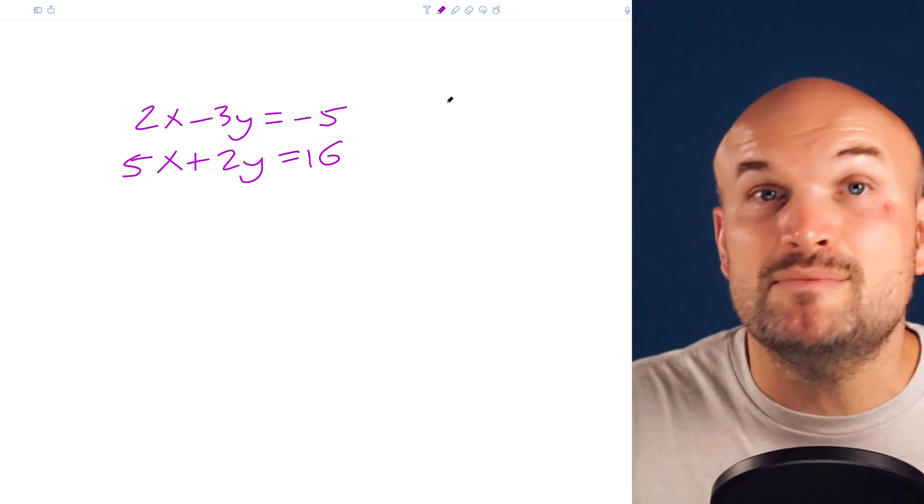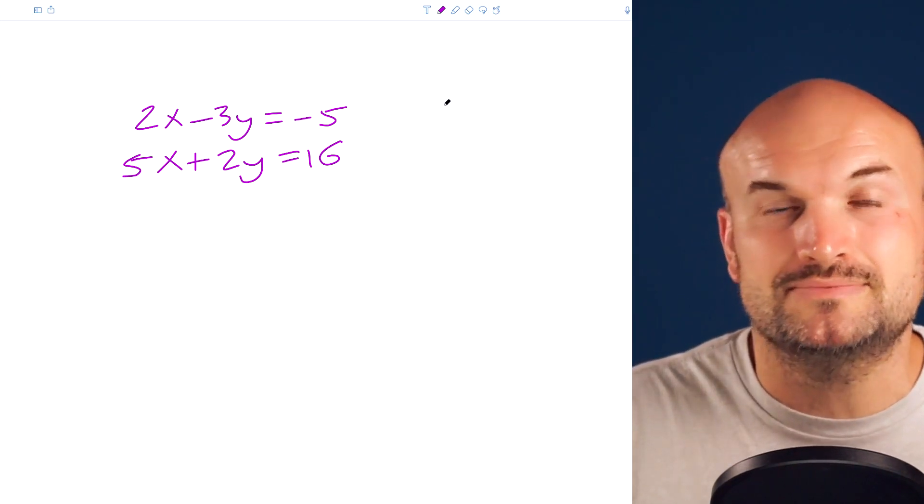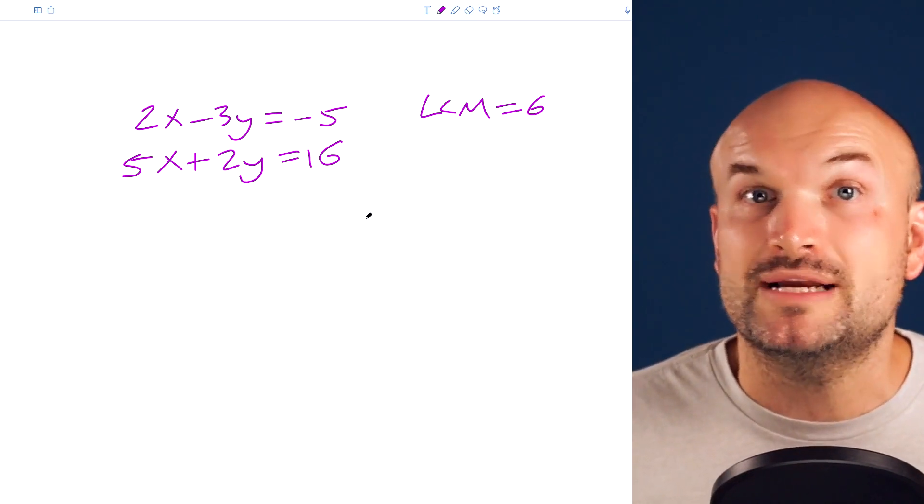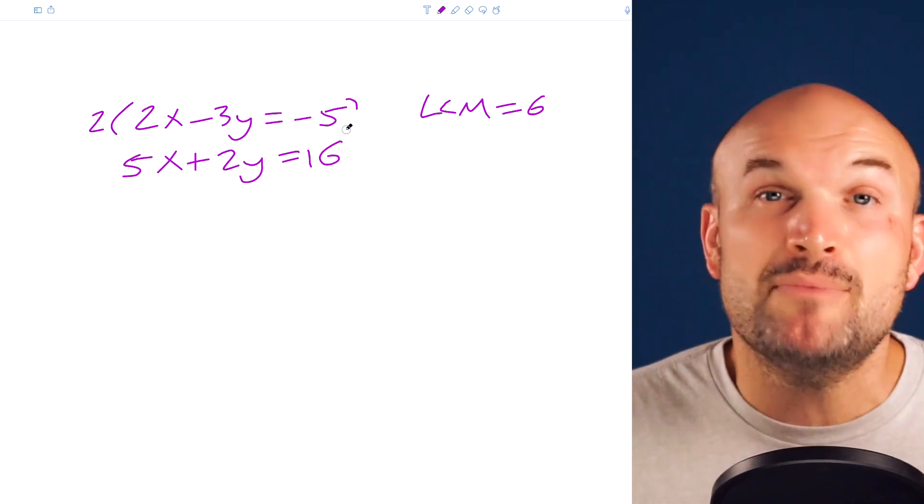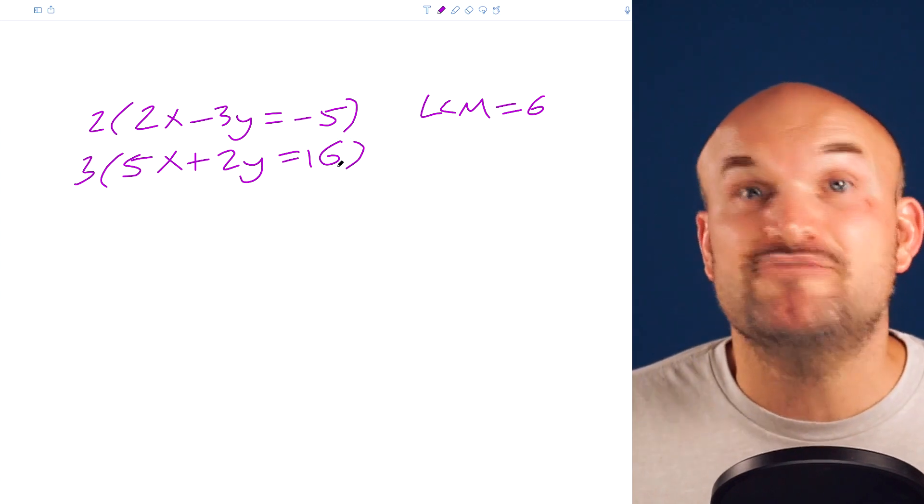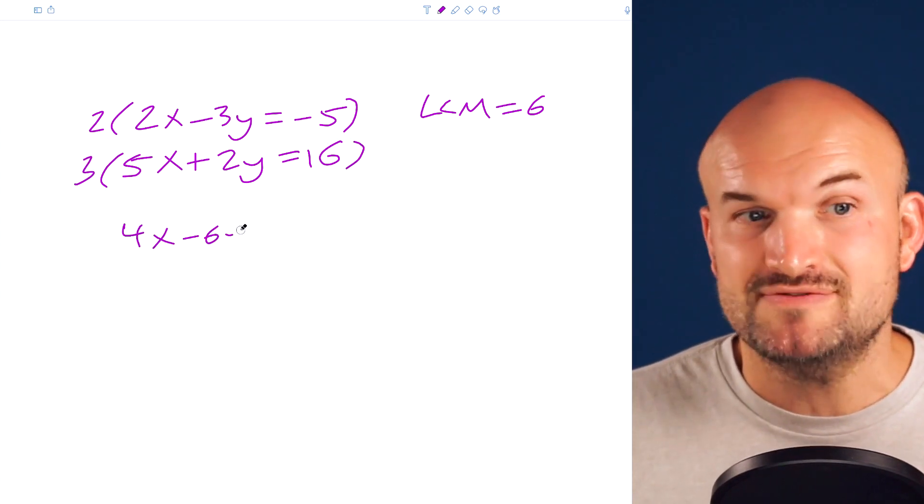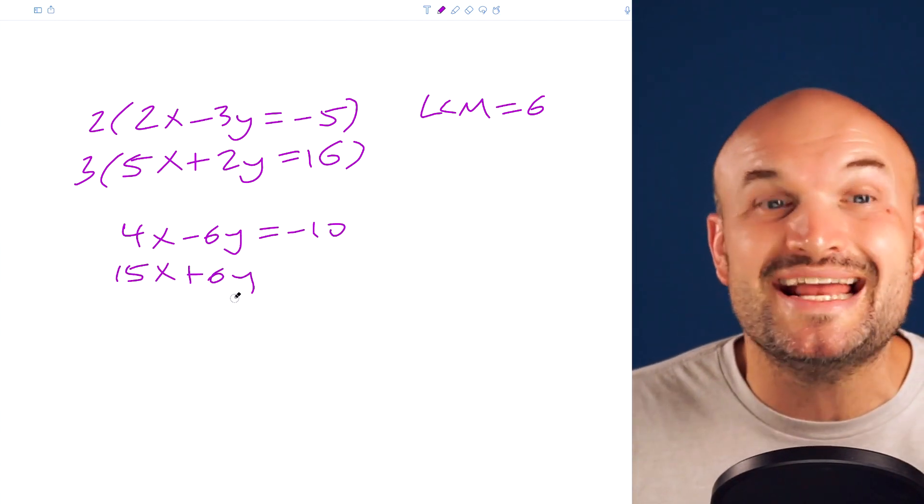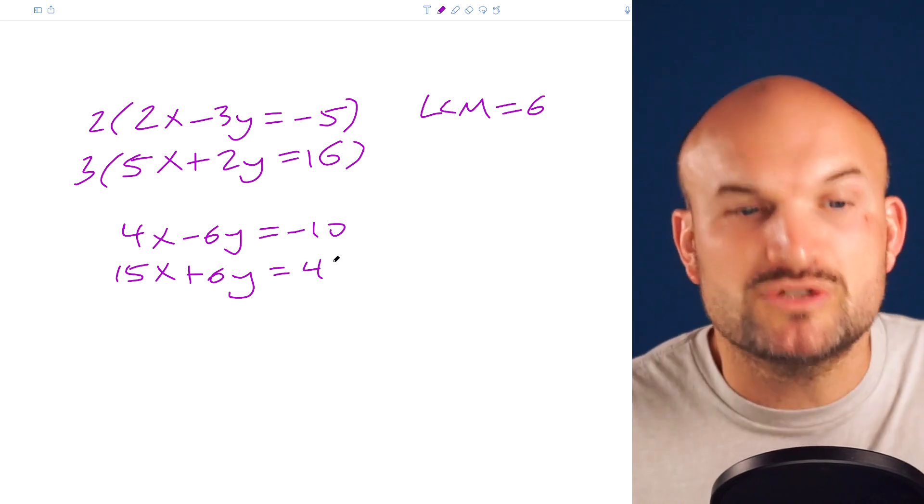And if I recognize the least common multiple of 3 and 2 is 6, then all I need to do in the top equation is multiply by 2. And the bottom equation, I just need to multiply by 3. Now what you can notice is I took this 2 and I multiplied by each and every term to obtain a 4x minus 6y equals negative 10. And in the second equation, I took the 3 and I multiplied by everything in the bottom equation to obtain a 15x plus 6y equals 48.